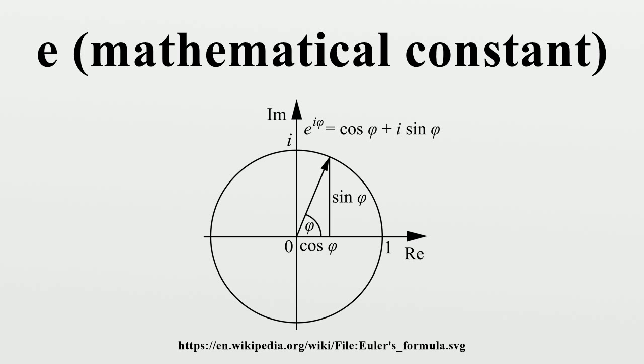One such approach begins with an infinite sequence of independent random variables x_1, x_2, ... drawn from the uniform distribution on [0, 1]. Let V be the least number n such that the sum of the first n observations exceeds 1. Then the expected value of V is e.